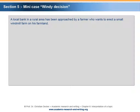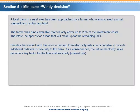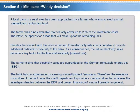A local bank in a rural area has been approached by a farmer who wants to erect a small windmill farm on his farmland. The farmer has funds available that will only cover up to 20% of the investment costs; therefore, he applies for a loan to make up the remaining 80%. Besides the windmill and the income derived from electricity sales, he is not able to provide additional collateral. As a consequence, the electricity sales become a key factor for financial feasibility. The farmer claims that electricity sales are guaranteed by the German Renewable Energy Act (EEG). The bank has no experience concerning windmill project financings; therefore, the executive committee asks the credit department to provide a memorandum that analyzes the interdependencies between the EEG and project financing of windmill projects in general.